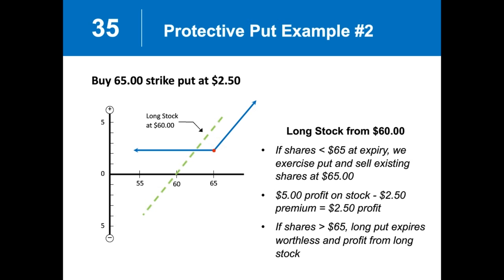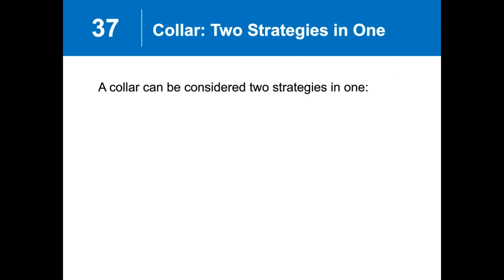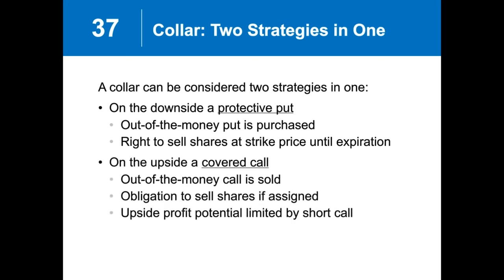The next strategy is the options collar. The collar strategy actually combines two of the strategies we've discussed. It's the protective put on the downside — we buy an out-of-the-money put, giving us the right to sell shares at the strike price until expiration. The other part is a covered call — we own the stock and sell an out-of-the-money call, taking on the obligation to sell shares if assigned. As Ed mentioned, we have put an upside cap on our stock position by selling that short call. This strategy does require owning the shares of stock.